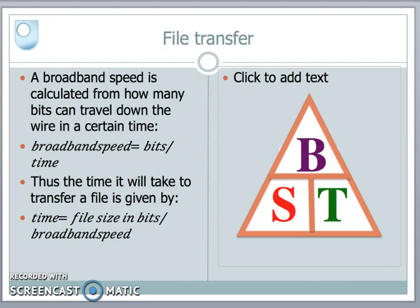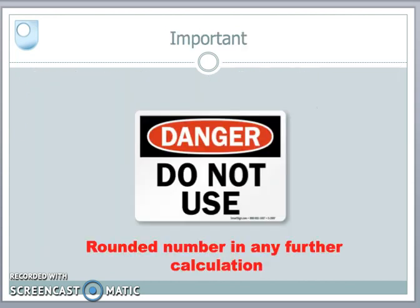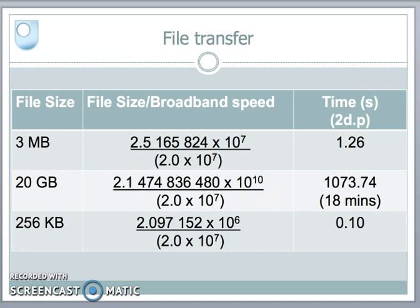Just a word of warning: when we do calculations, we never use any rounded numbers — we must go back to the original numbers we calculated, not the ones rounded to three significant figures. Using the original calculations, dividing total bit size by broadband speed: my three megabyte file will arrive in about 1.26 seconds, my 20 gigabyte file will take about 18 minutes, and my 256 kilobyte file will arrive in about a tenth of a second.